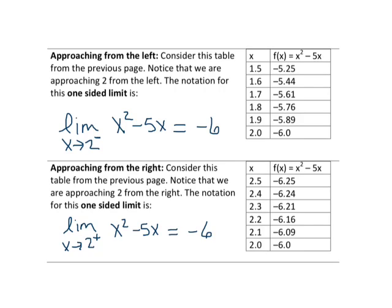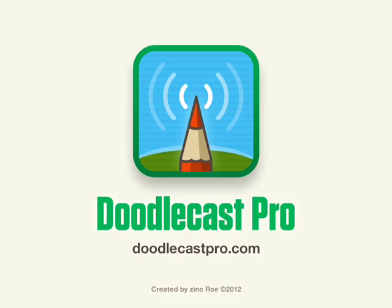But it's important to note now what we mean by approaching from the left and approaching from the right. So approaching from the left has a superscript of a negative, approaching from the right has a superscript of positive. So keep that in mind when you're working on one-sided limit problems in the future.